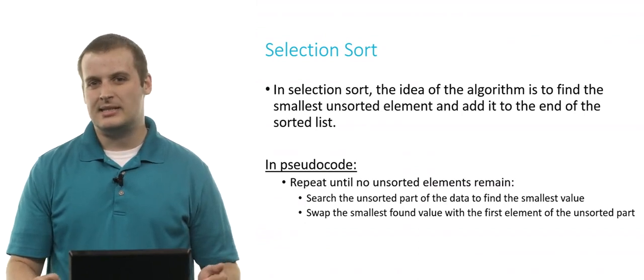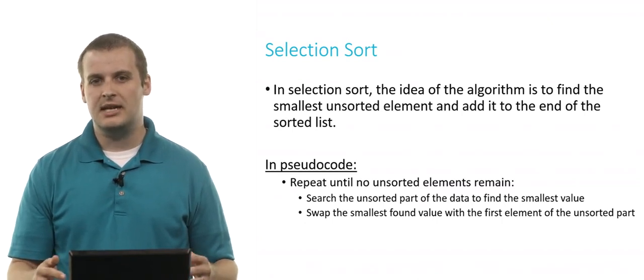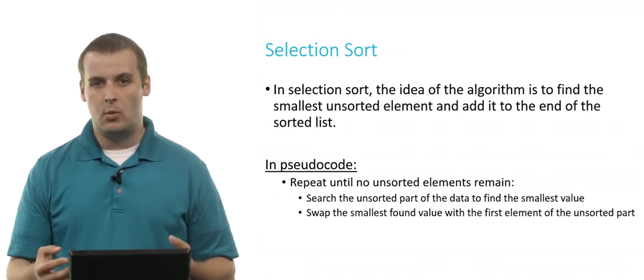In selection sort, the basic idea is this: find the smallest unsorted element and add it to the end of the sorted list. Effectively, what this does is build a sorted list one element at a time.